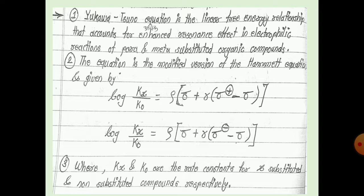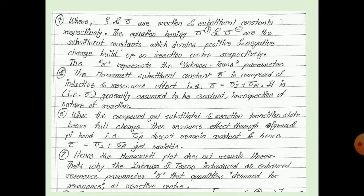Given by log Kx/K0 equals rho times (sigma plus r times (sigma plus minus sigma)), and second is log Kx/K0 equals rho times (sigma minus r times (sigma minus minus sigma)), where Kx and K0 are the rate constants for x-substituted and non-substituted compounds respectively. Rho and sigma are the reaction and substituent constants respectively. The equation has sigma plus and sigma minus as substituent constants which denote positive and negative charge buildup on the reaction center respectively.